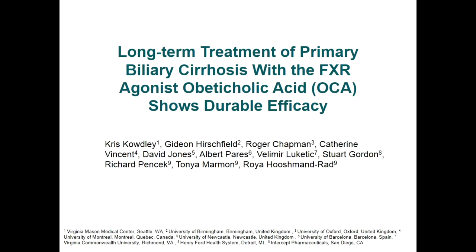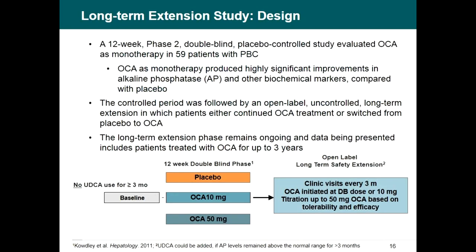You will see several very interesting presentations at this ILC looking at the effects of obeticholic acid on different diseases. I highlight the long-term treatment of PBC — primary biliary cirrhosis — with obeticholic acid. This was a 12-week phase 2 double-blind placebo-controlled study evaluating obeticholic acid in 59 patients with PBC. Obeticholic acid produced highly significant improvements in alkaline phosphatase and other biochemical markers compared with placebo. Most PBC patients receive ursodeoxycholic acid, but not all respond, so we need new treatment options for those who do not.